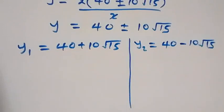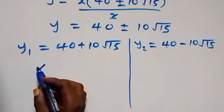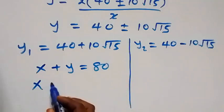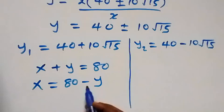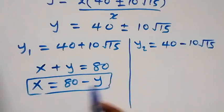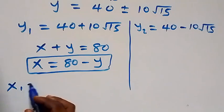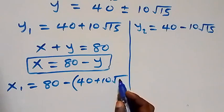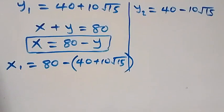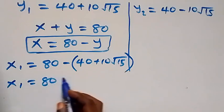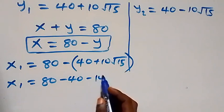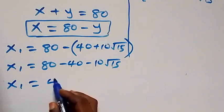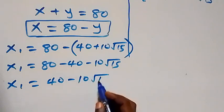We can get the corresponding values of x from x + y = 80, so x = 80 − y. Therefore x₁ = 80 − y₁ = 80 − (40 + 10√15) = 80 − 40 − 10√15, which gives x₁ = 40 − 10√15.